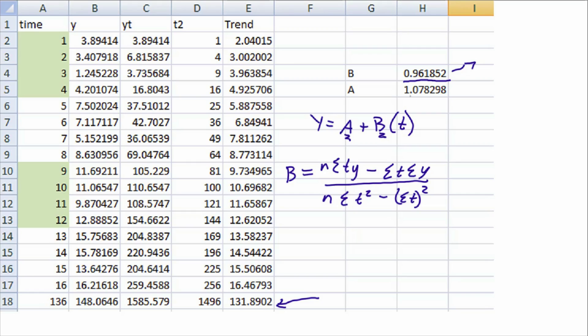To calculate out the intercept, so we want to calculate out A, A is just going to be the average value of Y, which in this case is column B, and then we're going to subtract B, which we calculated above, which is the 0.96 number, and we're going to multiply that by the average of T. If you do that math, you will get A is equal to 1.078298. That will actually give you column E here, which is your trend column. You use this equation with your A plus your B, plugging in A and B from above, and then using T from column A, and you will calculate out your trend column here.